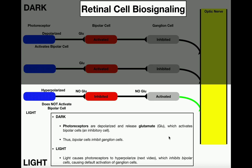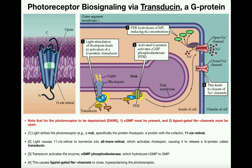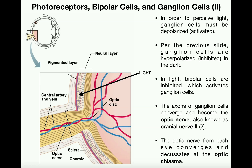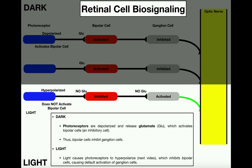We're going to stop there and pick up in the next video, where we'll go back to the photoreceptors and examine the exact physiology of what's going on — including photobleaching and the 11-cis retinal cycle. After that, we will discuss the general pathway to the brain. Please make sure to like this video and subscribe to my channel for future videos and notifications. Thank you very much.